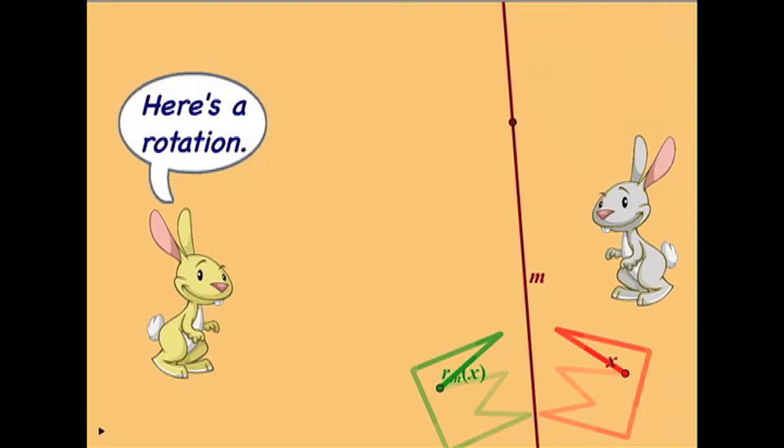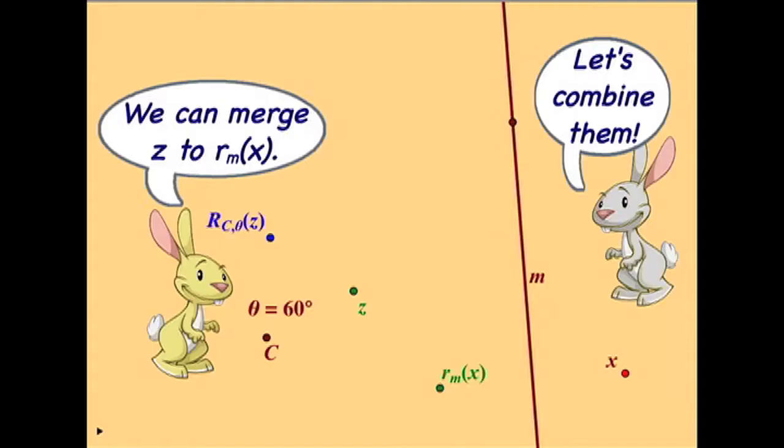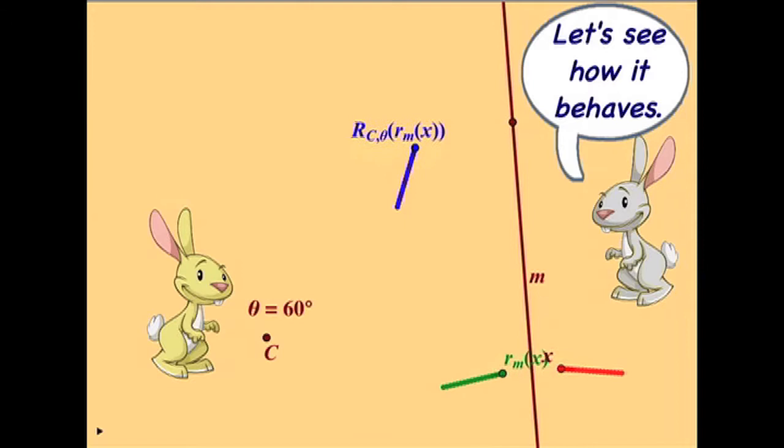So Randall starts with a reflection. Rashida comes up with a rotation. And Rashida says we should merge her independent variable with a dependent variable from the reflection and see how the result behaves.